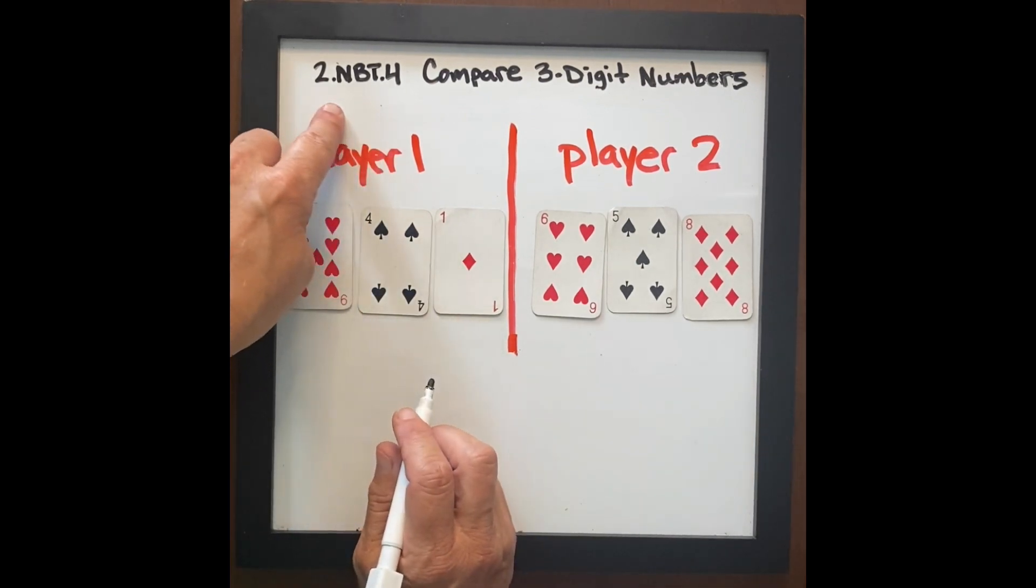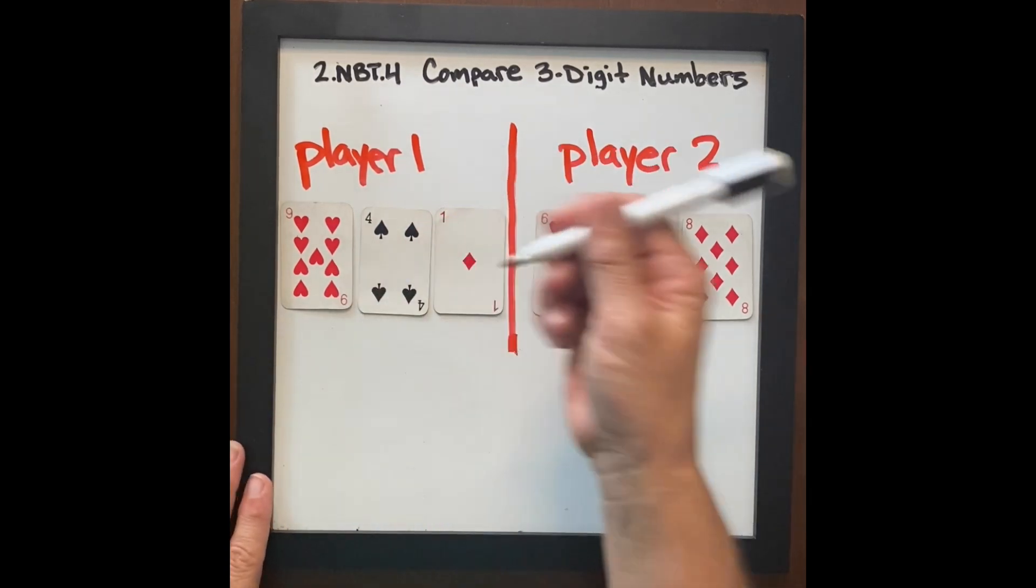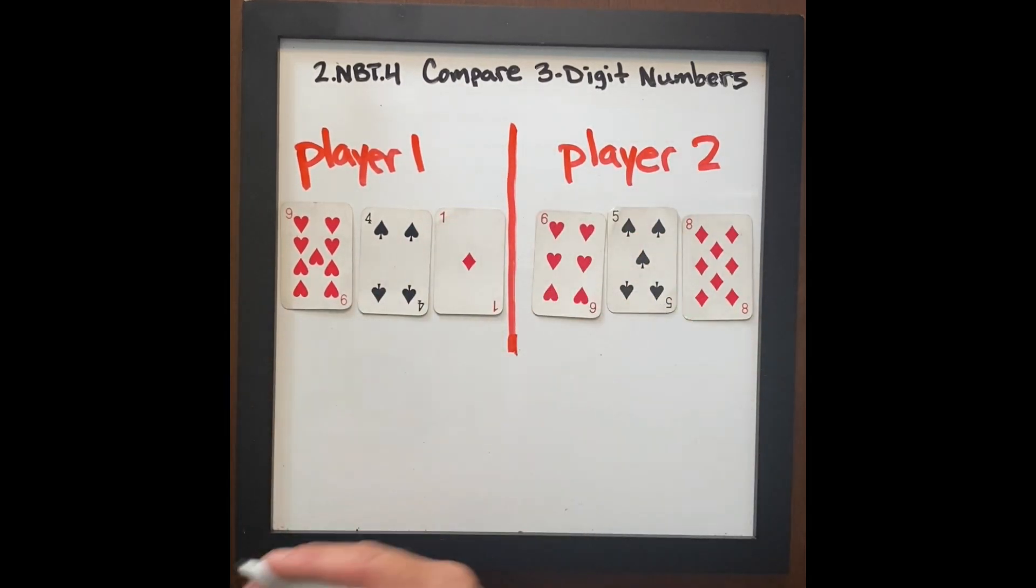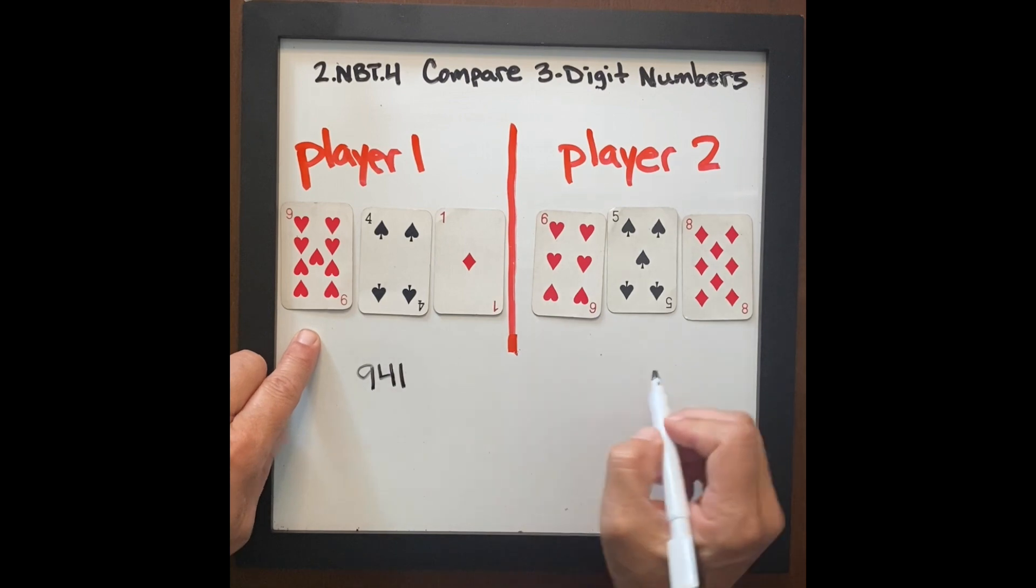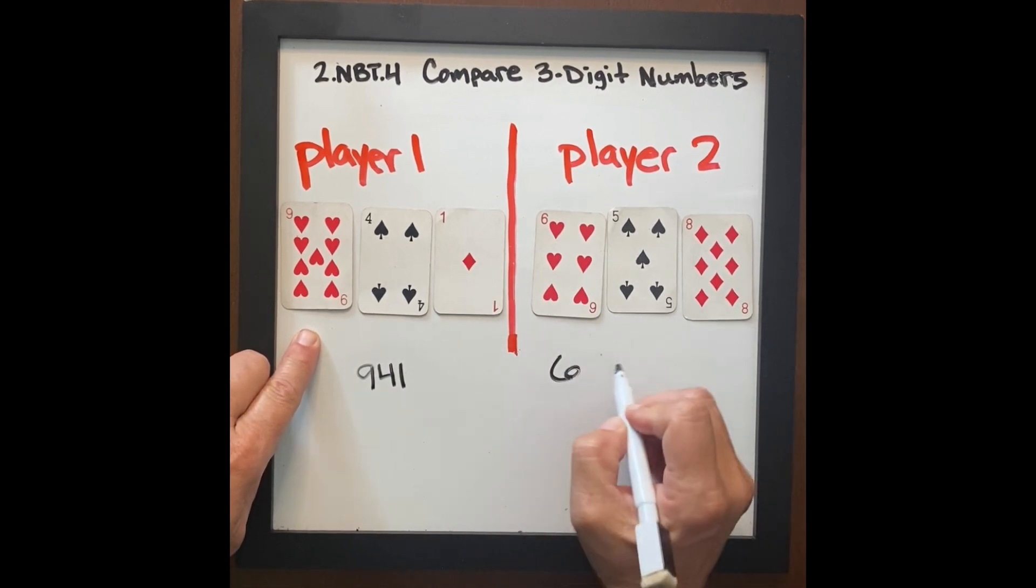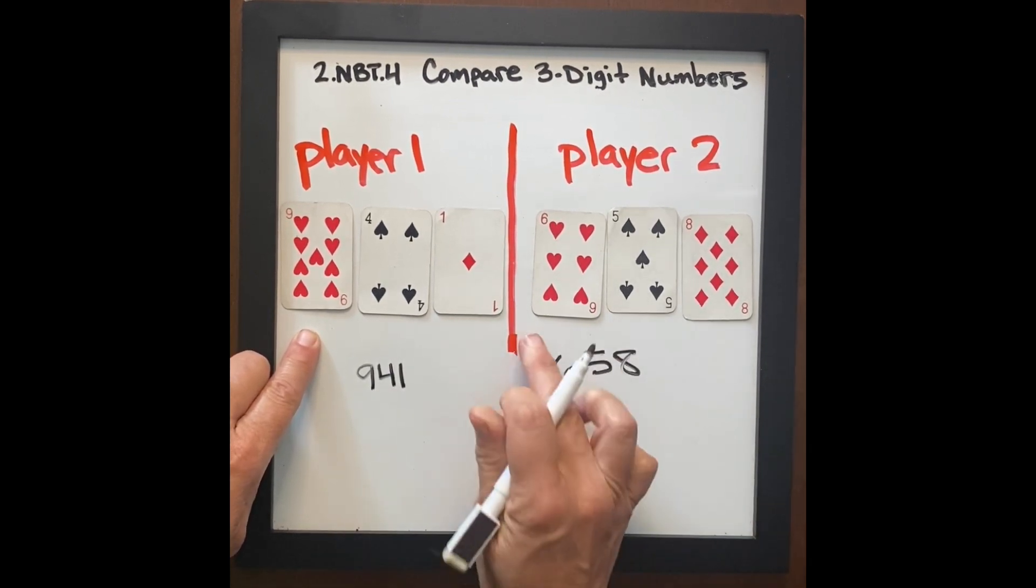In first grade, 1.NBT.2, students compared two-digit numbers using symbols less than, equal to, or greater than. So we want to continue that practice here. We have 941 is greater than 658, and we want to do this with value.